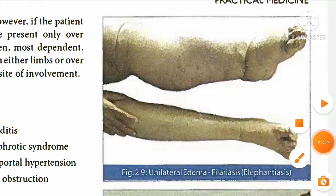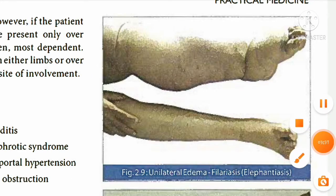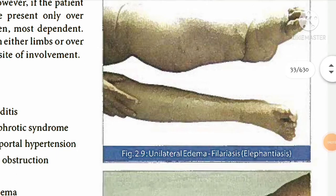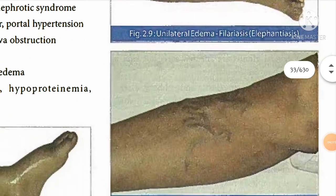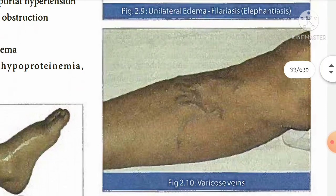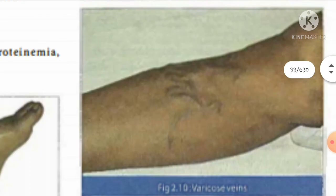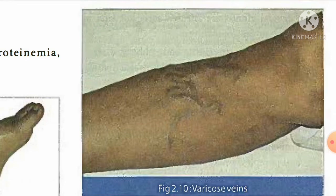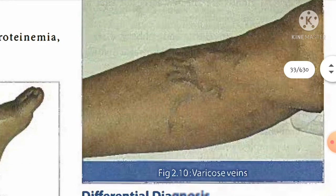This image shows unilateral edema in filariasis, also called elephantiasis. Another image shows varicose veins where there is obstruction in the veins, leading to fluid accumulation.